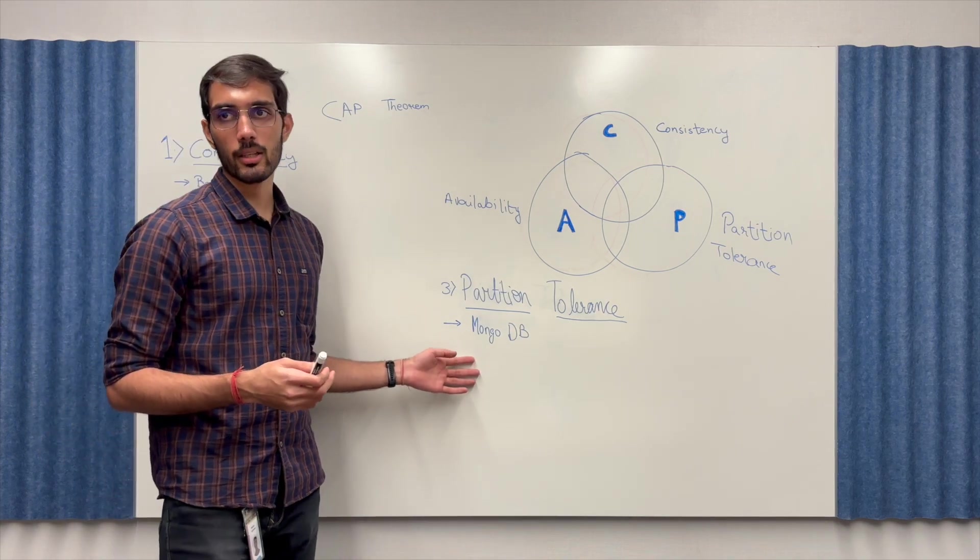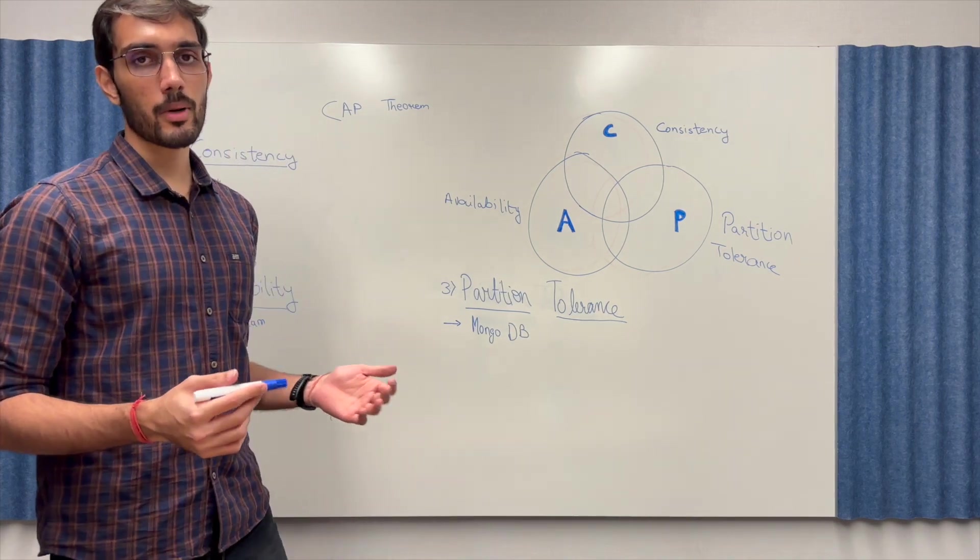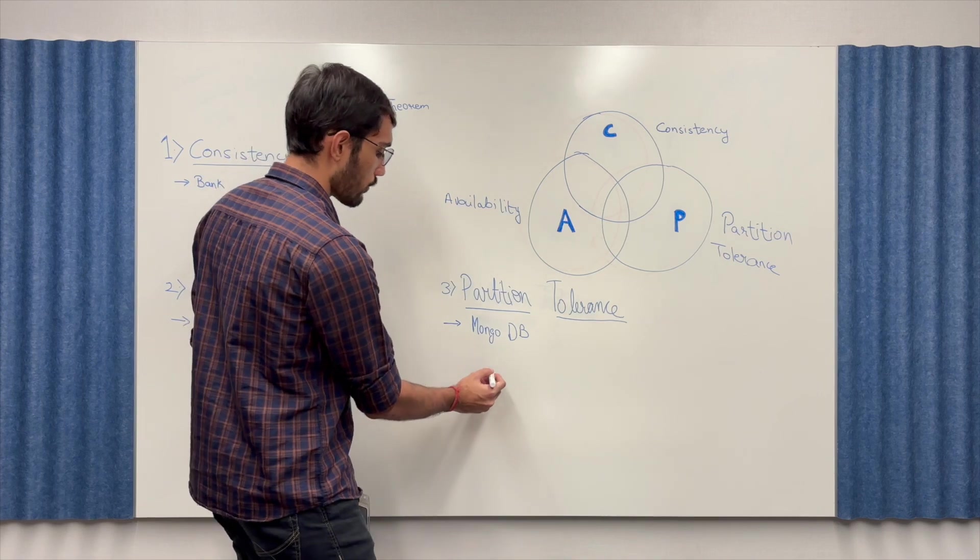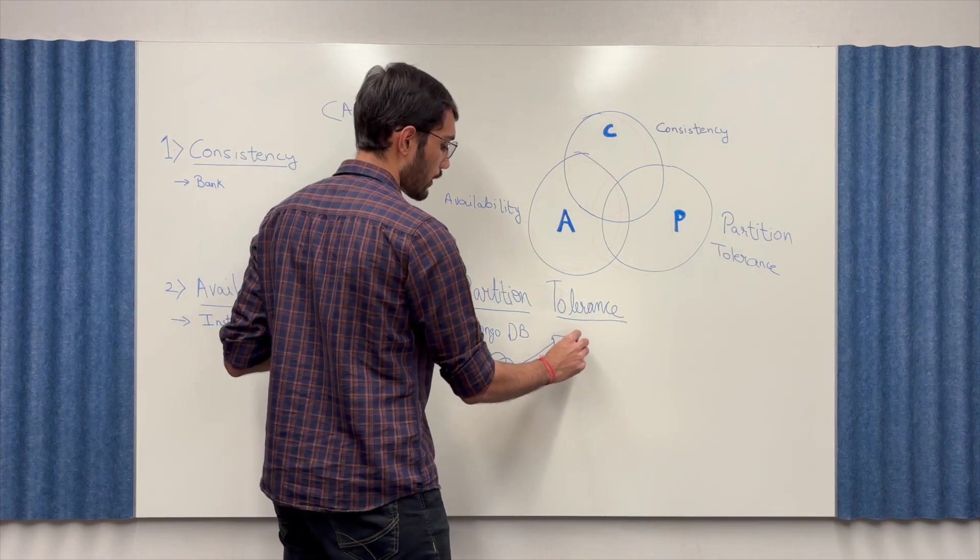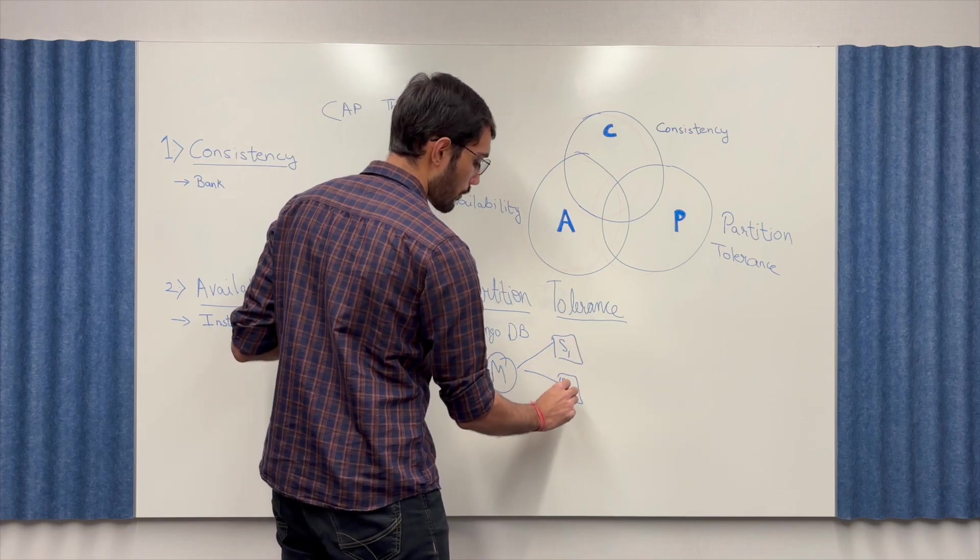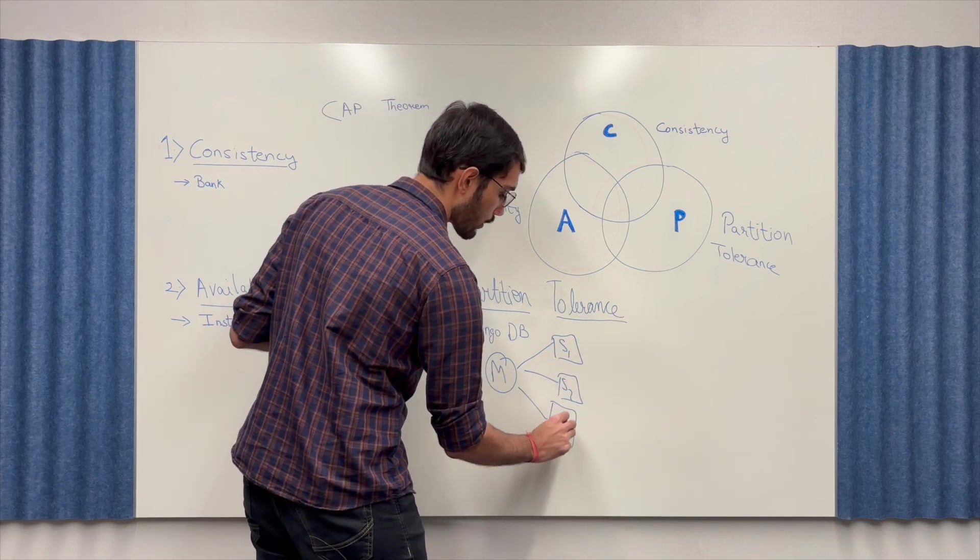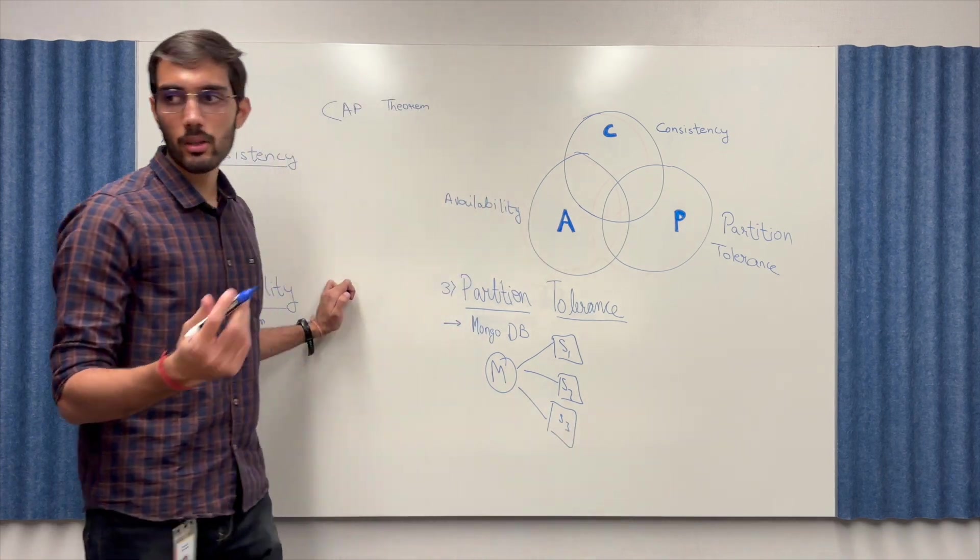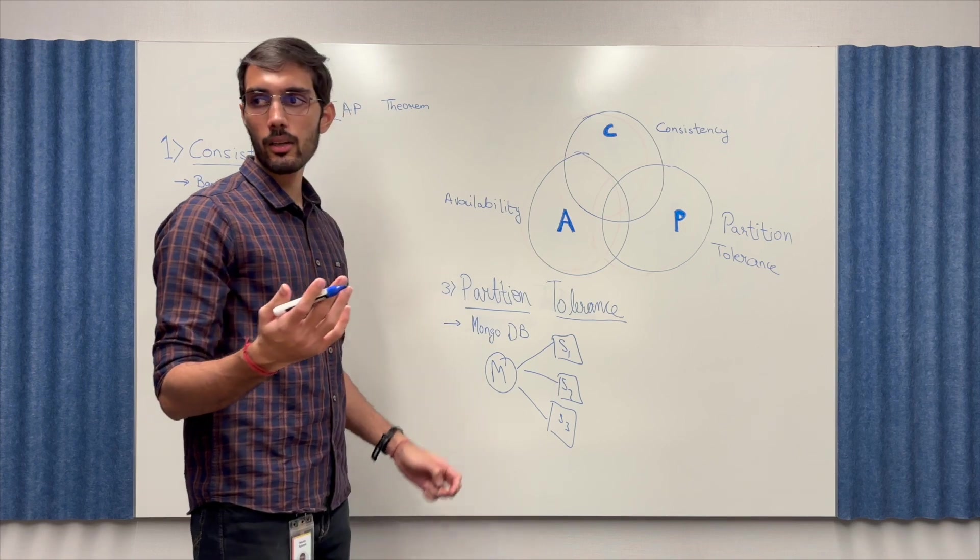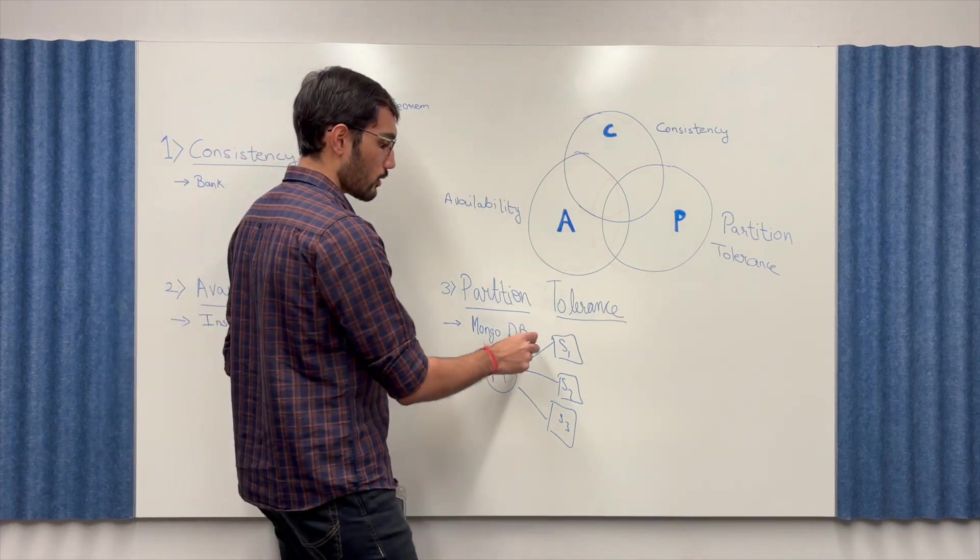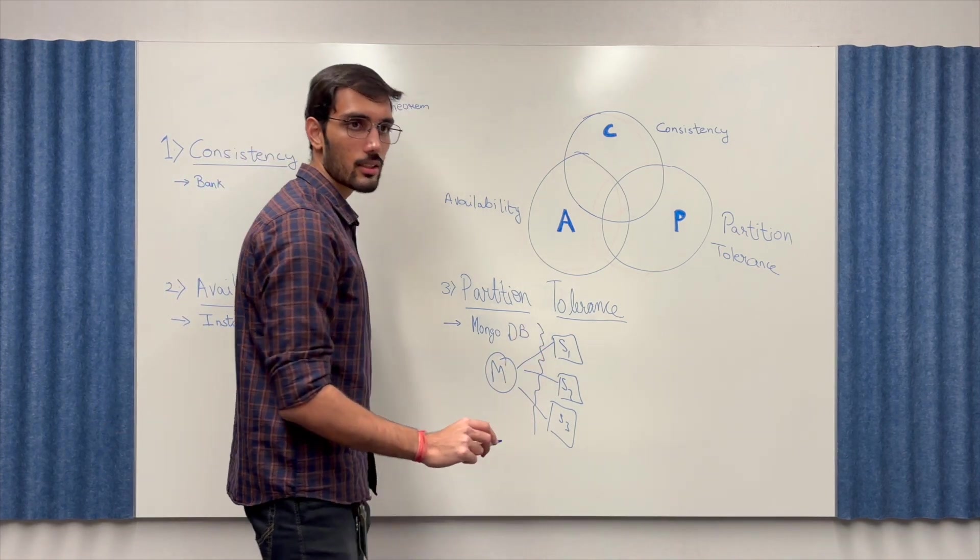So think of it like MongoDB. In MongoDB we have a master-slave architecture. So we have one master which takes in all the rights and then there are multiple slaves. What happens here is that let's say there's a network problem and the master is unable to communicate with any of the slaves. So let's say there is a partition in the network.